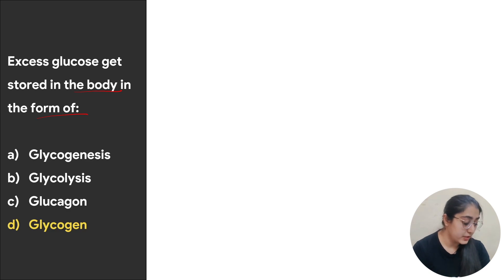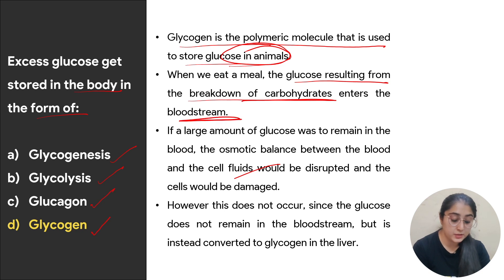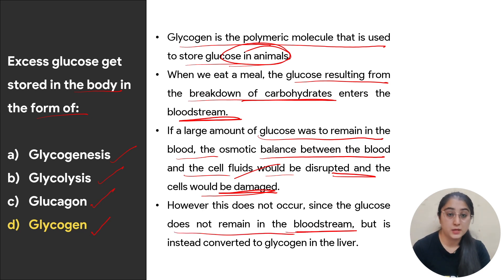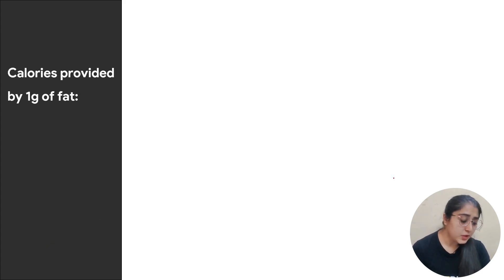Next: excess glucose gets stored in the body in the form of — options are glycogenesis, glycolysis, glucagon, or glycogen. Glycogen is a polymeric molecule used to store glucose in animals. After a meal, glucose from carbohydrate breakdown enters the bloodstream. If it remained in the blood the osmotic balance would be disrupted, so the body converts it to glycogen and stores it in the liver. The correct answer is glycogen.